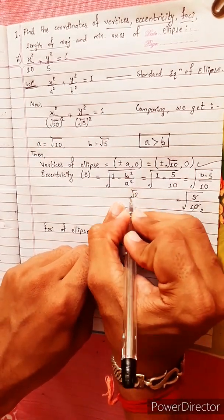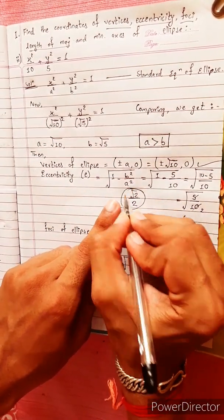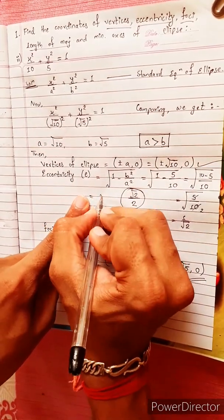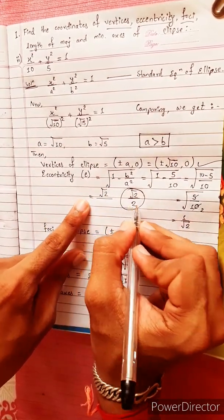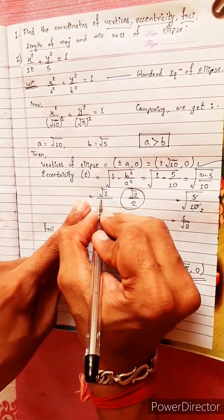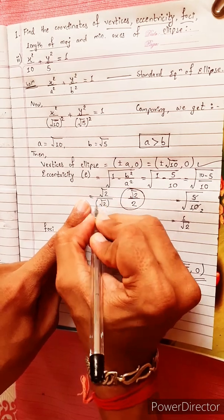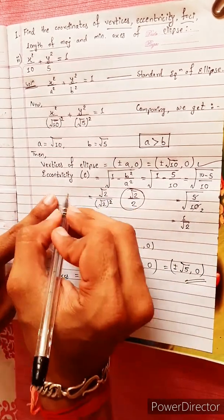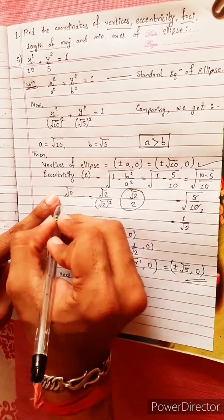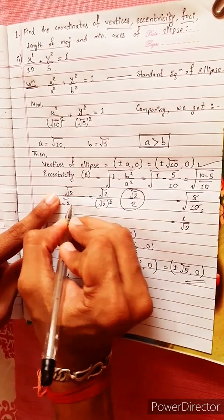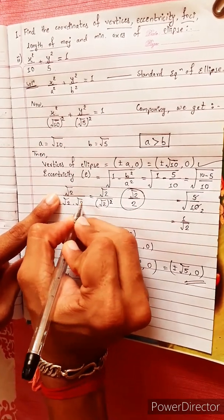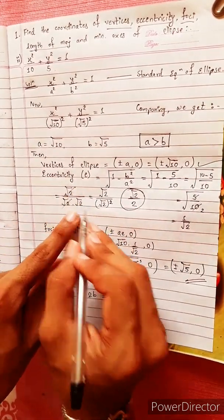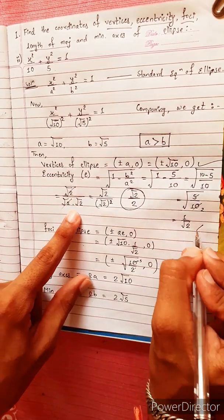Checking the answer from the book: eccentricity equals under root 2 divided by 2. Since under root 2 divided by 2 equals 1 by under root 2, this confirms our answer. The eccentricity is under root 2 divided by 2.